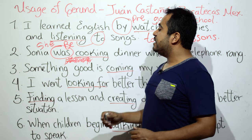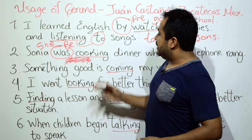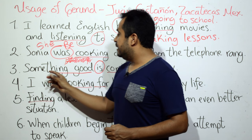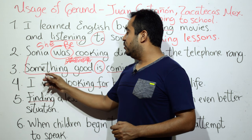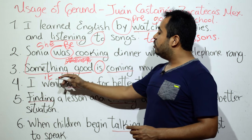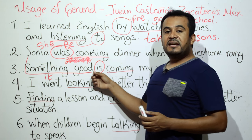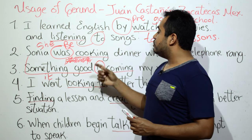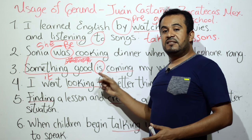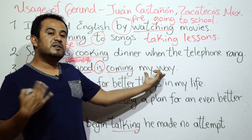'Something good is coming' — algo bueno está viniendo, algo bueno viene. 'Something good' es el sujeto, e 'is' es otro verbo 'to be'. Aquí tenemos un presente progresivo — acá teníamos un pasado progresivo y aquí un presente progresivo. Se usa gerundio donde lleva verbo 'to be' como 'was' y como 'is'. 'Something good is coming my way.'